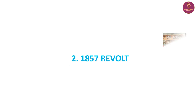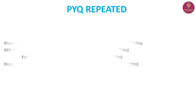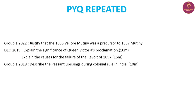The second topic is the 1857 Revolt. This is the most important topic. The question we have seen from previous exams covers the first phase of the 1857 Revolt, including its significance. Then we look at the Revolt and its aftermath.